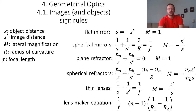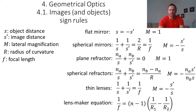In this video we will discuss sign rules. Most of the questions you can have on geometrical optics can be answered using a few formulas. This formula relates the distance of the object, the distance of the image, and the radius of curvature or the focal length of the device. Either you will want to find the object distance s, the image distance s', the lateral magnification m, the radius of curvature r, or the focal length — and all of these quantities are related by these formulas.